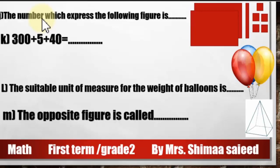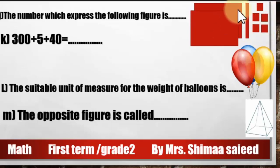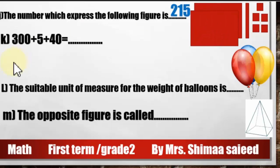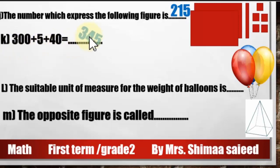The number which expresses the following figure: here we have 6 ones, 1 ten, 2 hundreds, so the number is 216. Then 300 plus 5 plus 40 equals 345.